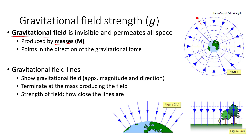Gravitational field line diagrams are a useful way to show the gravitational field around an object or distribution of mass. They show us both the approximate magnitude and direction of the gravitational field. Field lines point in the direction of the force, and they end at the mass producing the field.